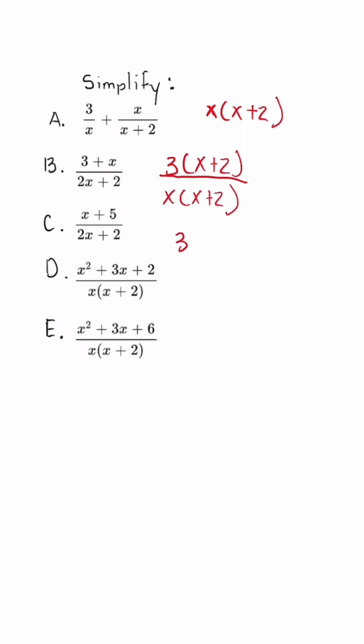Once we do that, we're going to get 3x plus 6. Now, when we go to the second fraction, all we're missing in the denominator is x. So we're going to multiply top and bottom by x. Once we do, we're going to get x squared.